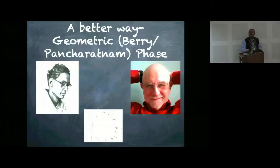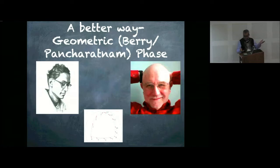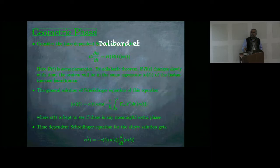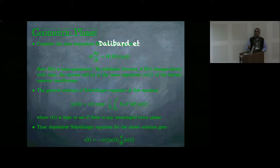A better way is through the geometric phase, and this meeting is all about that. These two pictures — Berry-Pancharatnam phase — have been displayed here a number of times, and Professor Berry is here. One looks at the time evolution of a Hamiltonian with a continuously evolving parameter. If one solves the simple time-dependent Schrödinger equation, one can figure out the accumulated phase, and if there is a geometric phase there will be an extra term.